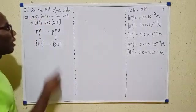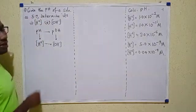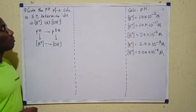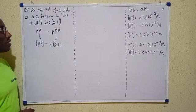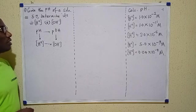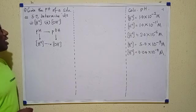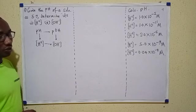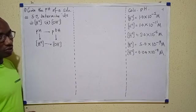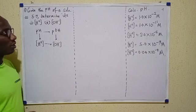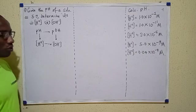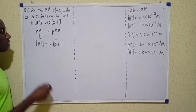But for now there's another question here that is in two parts. It says: given the pH of a solution as 5.7, determine first its hydrogen ion concentration, and then second its hydroxyl ion concentration. It's a very simple question, but here's what we need to learn first.